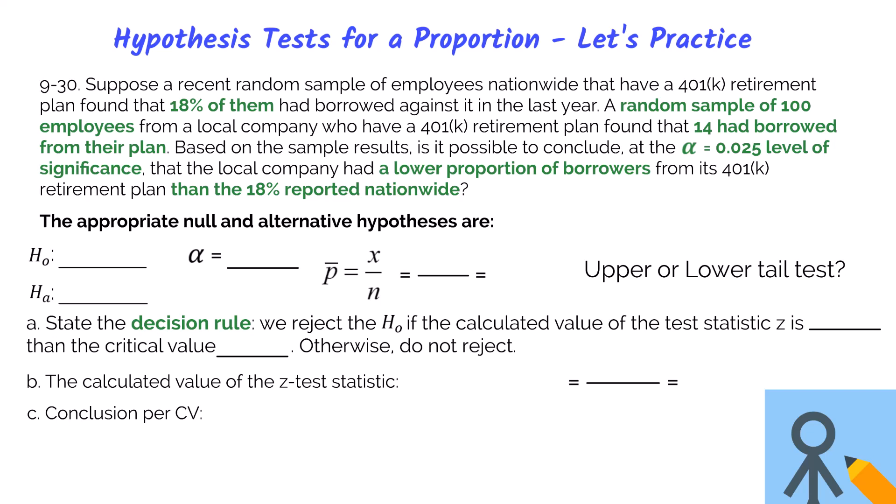Let's work through problem 9-30. A recent random sample of employees nationwide with a 401k retirement plan found that 18% had borrowed against it in the last year. A random sample of 100 employees from a local company found that 14 had borrowed from their plan. We need to identify the key pieces of information. The context clue 'nationwide' tells us the population proportion is 0.18. The question asks us to compare the local company's proportion of borrowers to the national proportion.